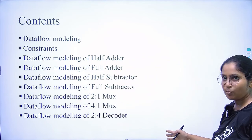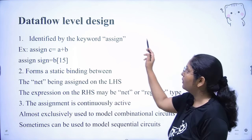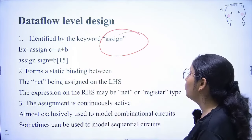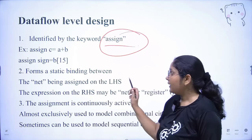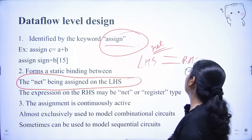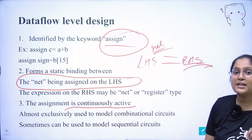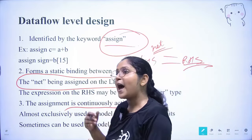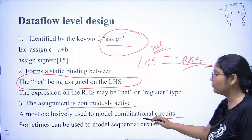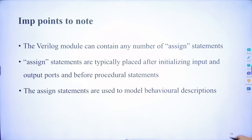The continuous assignment is given by the 'assign' keyword. The important point is: whatever is on the LHS must be net type. The RHS could be anything, but LHS has to be net type. Assignment happens continuously — whenever there is a change, the assignment is done. It is used mostly to model combinational circuits, but sometimes sequential circuits as well.